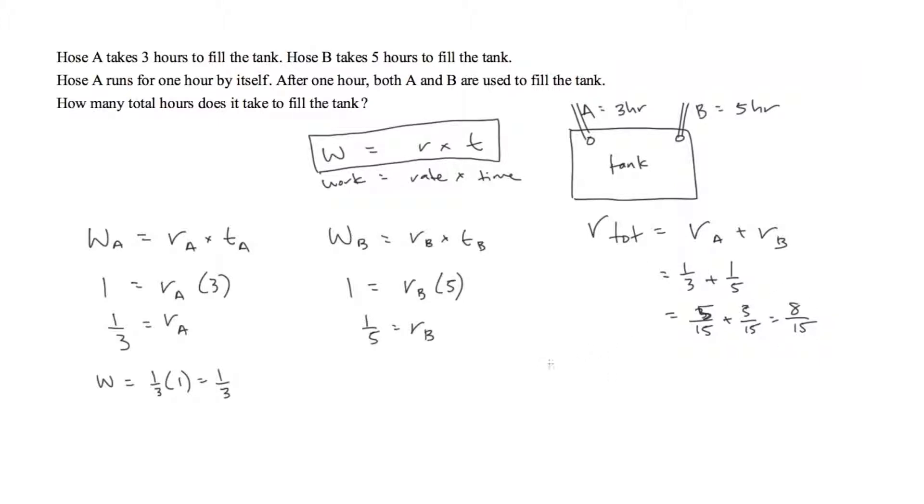So now we plug that into our work equals rate times time equation again. But remember that Hose A by itself has already done one third of the work. So the work that is left to do would be the total work, which is a tank, minus what Hose A has already accomplished. That's equal to 8 over 15 times t. So 2 thirds is equal to 8 over 15 times t.